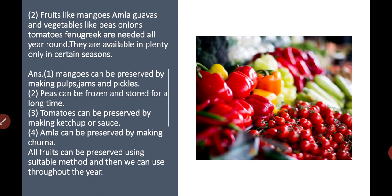Mangoes can be preserved by making pulp, jam, and pickles. Peas can be frozen and stored for a long time. Tomatoes can be preserved by making ketchup and sauce. All fruits can be preserved by using a suitable method, and then we can use them throughout the year.